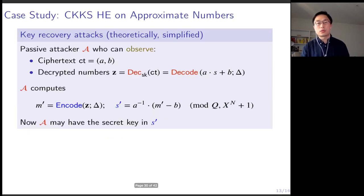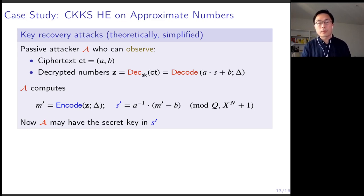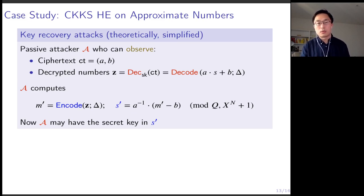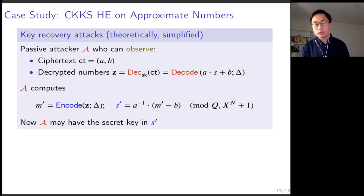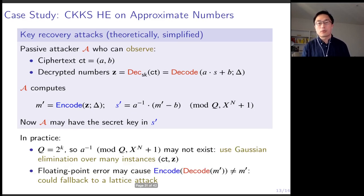This brings us to the core idea of our key recovery attack. In this attack, we consider passive attackers who can observe some ciphertexts and also observe the decrypted results of those ciphertexts. With this information, the attacker can first re-encode the decrypted numbers into a polynomial m', and then compute the inverse of the full decryption function. At the end of the attack, the attacker may have the secret key. This attack looks simple and very efficient, but in practice there are some obstacles.